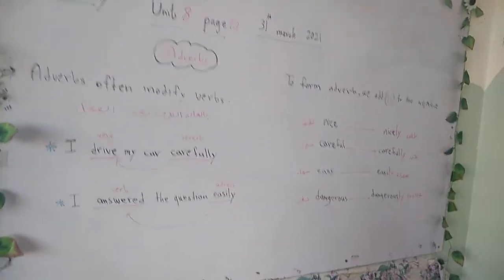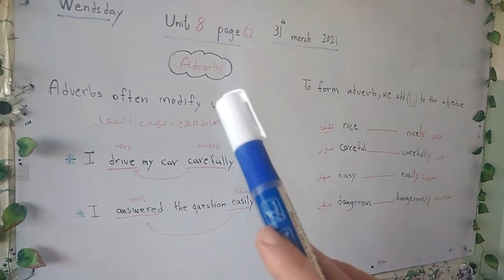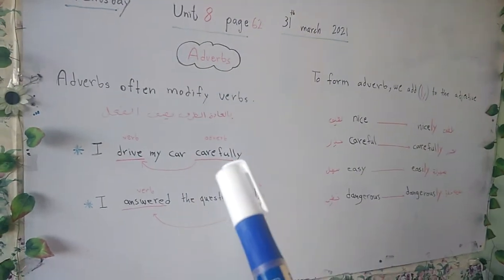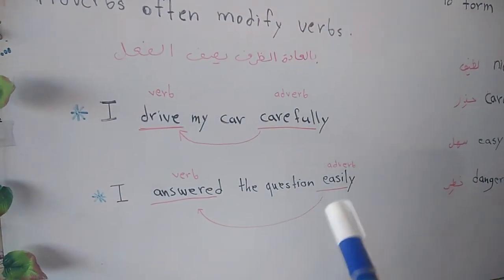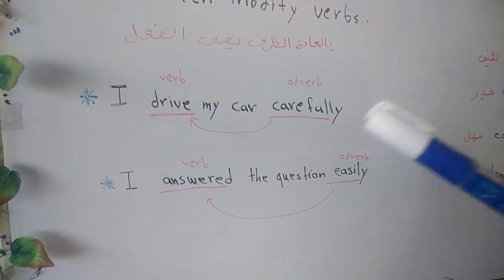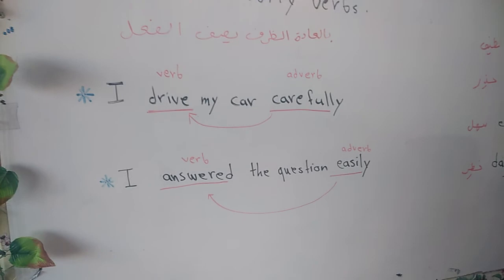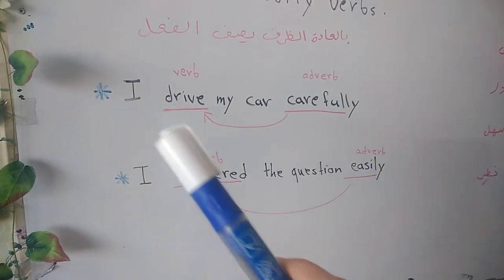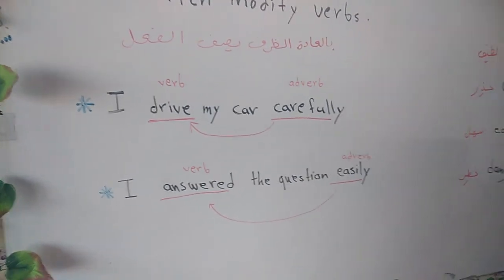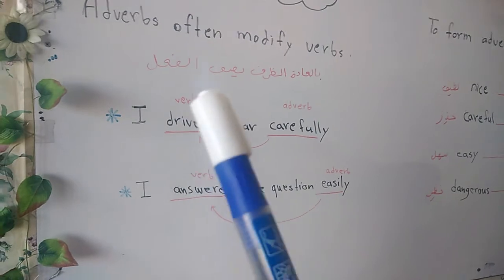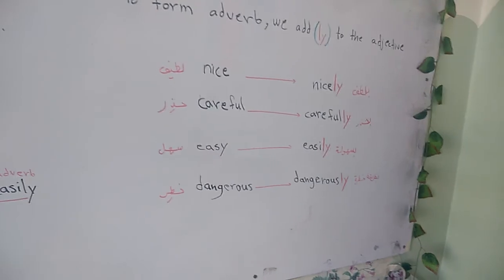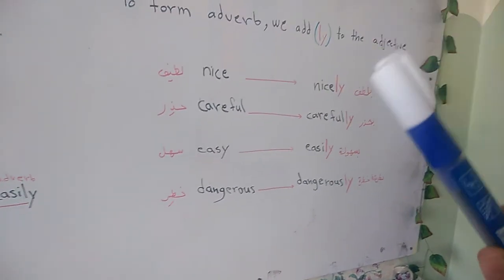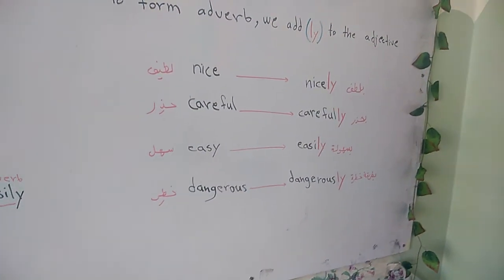يلي بدنا نعرفه بشكل عام من درسنا هاد: الـ adverb بيجي حتى يوصف الـ verb. إذا تركت فراغ وقلت لك حط careful ولا carefully — رح تختار adverb، ليش؟ لأنه بدك توصف الفعل. إذا بدي أوصف الفعل بستخدم adverb، أما إذا بدي أوصف اسم بستخدم adjective عادية. وثاني شي: الـ adverb غالباً بنضيف لها ly — بنضيف ly للصفة بتتحول لـ adverb.